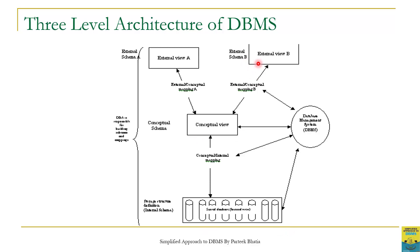There is a mapping between External and Conceptual levels — this is External-Conceptual Mapping for user B and for user A. Then we have another mapping between Conceptual and Internal Level, called Conceptual-Internal Mapping. The role of this mapping is to map one level with another: External level is mapped with Conceptual level using External-Conceptual Mapping, and Conceptual level is mapped with Internal level using Conceptual-Internal Mapping.